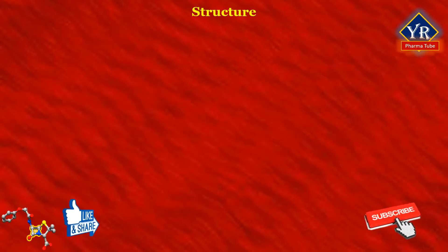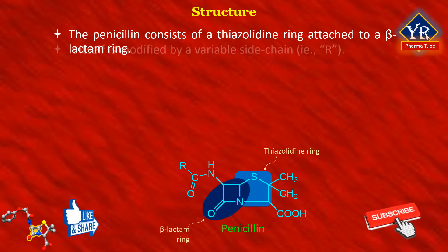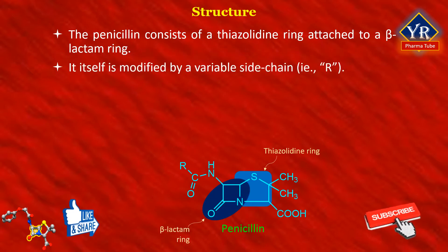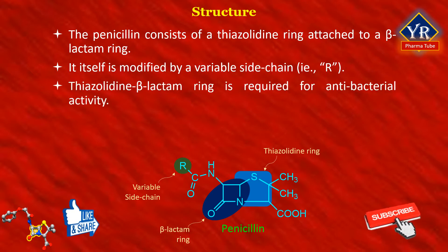Structure of Penicillin. The structure of penicillin consists of a thiazolidine ring attached to a beta-lactam ring. Penicillin itself is modified by a variable group in the side chain of the structure, that is R, as shown in the structure. The bicyclic ring system — that is, the thiazolidine beta-lactam ring — is required for antibacterial activity.